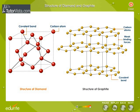Graphite, on the other hand, occurs in hexagonal layers stacked one on top of the other. In graphite, each carbon atom is bound to three other carbon atoms. Carbon atoms arrange themselves into layers, and in between layers the bonding forces are very weak. The layers can therefore easily slip over one another. This explains why the surface of graphite is soft and slippery to touch.